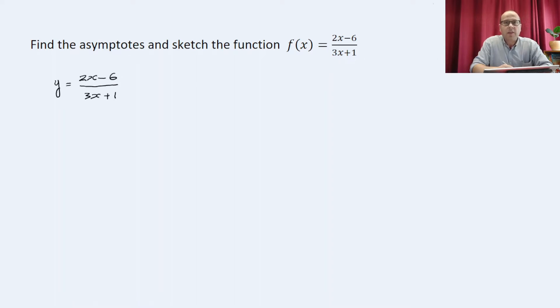To do that, I need to find the vertical asymptote. This function is defined whenever the denominator must not be zero. So 3x plus 1 equals 0, x equals minus one third.